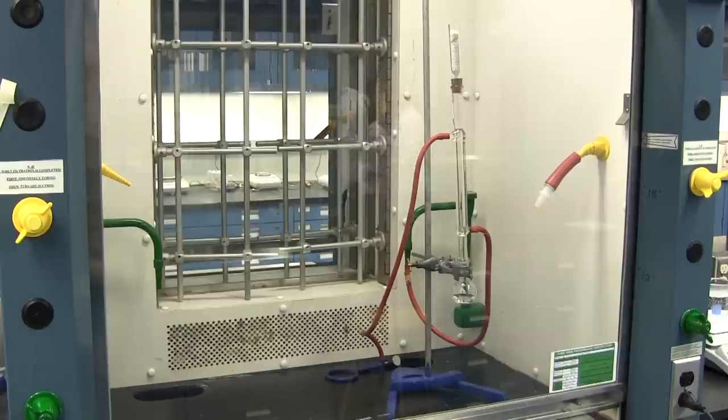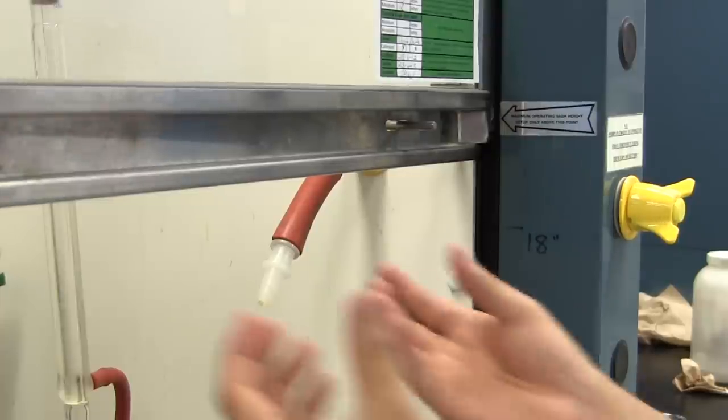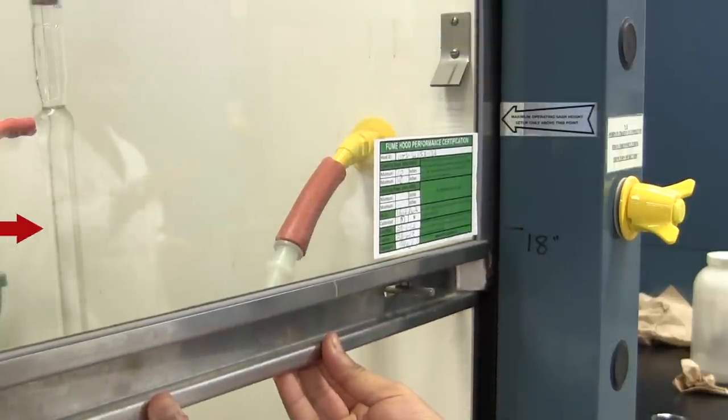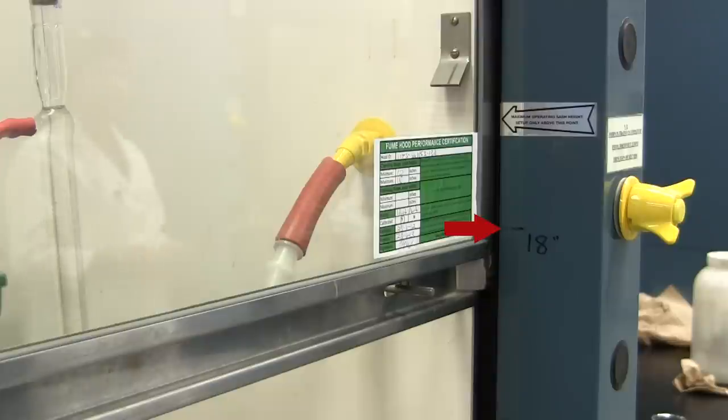While working on any experiment, please ensure that the fume hood is placed at the maximum height of 18 inches. As per lab safety requirements, a height over 18 inches is restricted and is not considered a safe practice.